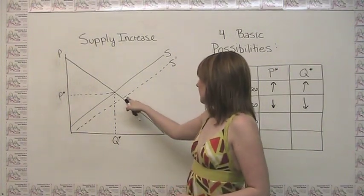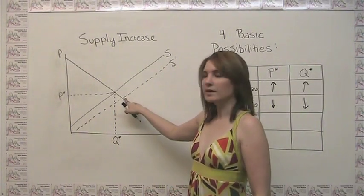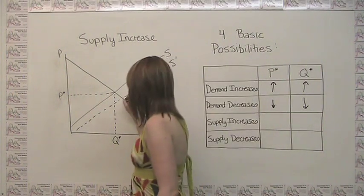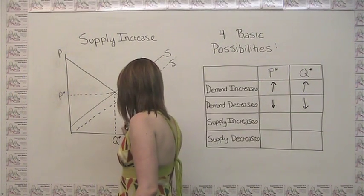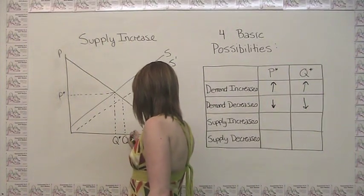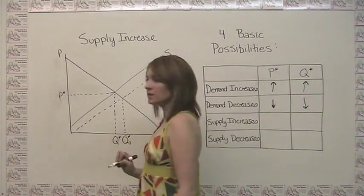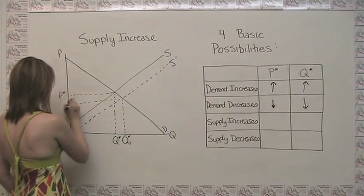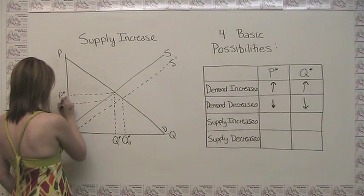And we say that the new equilibrium is where this new supply curve intersects with the original demand curve. So we get a new quantity Q1 star here, and a new price P1 star here.